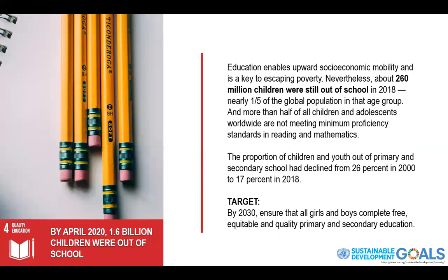Fourth, to have adequate and free education for all. In 2018, 260 million children were out of school. We all know that education is one of the keys to success in life. The United Nations targets that by 2030, no child will be deprived of free education from elementary to secondary.